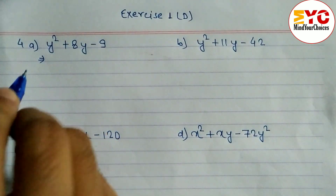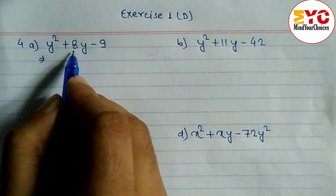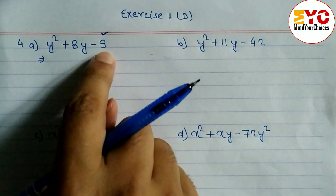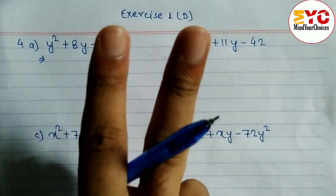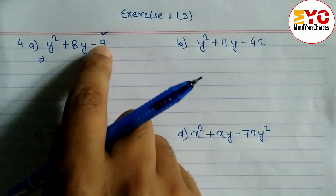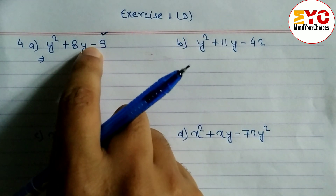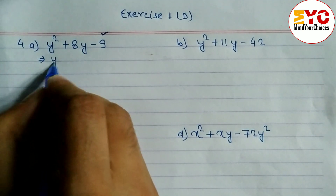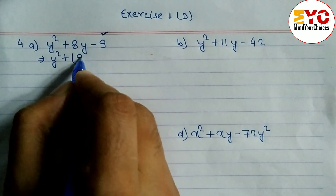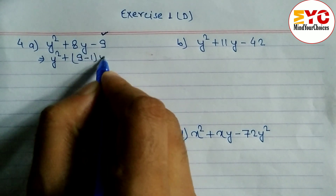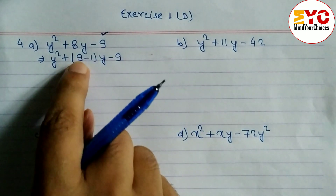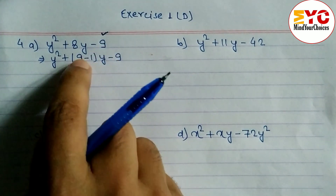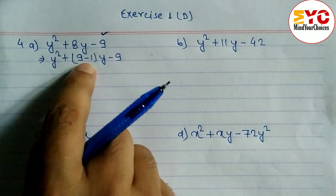We have to factorize y² + 8y - 9. We need to find two numbers whose multiplication gives 9 and subtraction gives 8. The factors are 9 and 1: 9 × 1 = 9 and 9 - 1 = 8. So we can write y² + 9y - 1y - 9.